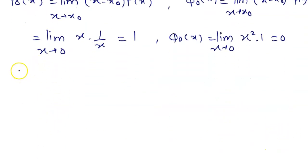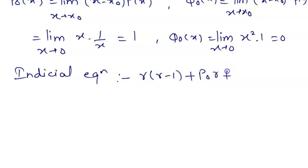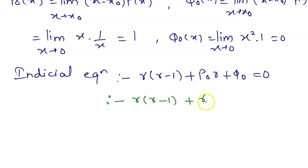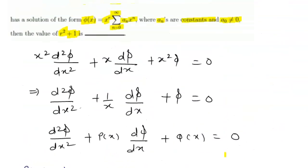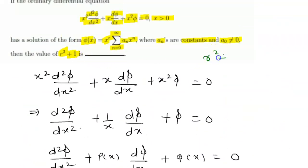The indicial equation in the series solution is r(r−1) + p₀·r + q₀ = 0. Substituting p₀ = 1 and q₀ = 0: r(r−1) + r = 0, which simplifies to r² − r + r = 0, so r² = 0, giving r = 0. Therefore r² + 1 = 0² + 1 = 1, which is our final answer.